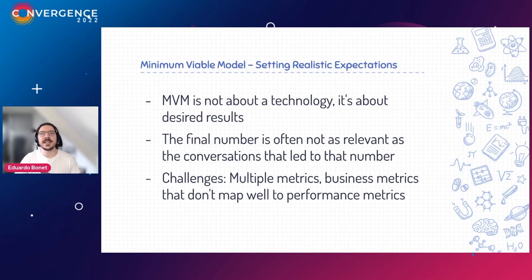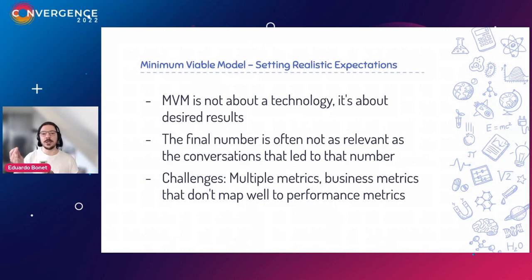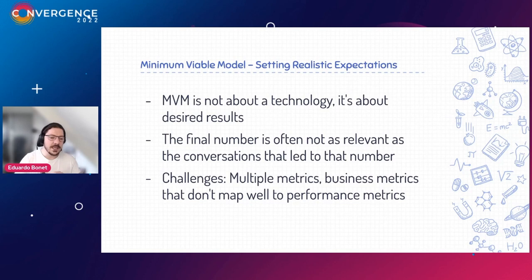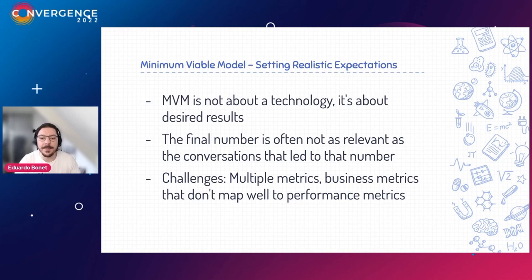At no point in this process do we speak about technology — which model, which stack, TensorFlow, random forests, or neural networks. It's about what's the minimum needed to consider this a success, and all technical decisions flow from that. The final number you reach — the MVM — is less important than the process that led to it. The number will likely need to be adjusted over time with new data and new assumptions. But the point is that this becomes a framework to talk about everybody's expectations right from the start, not six or seven months later. Challenges exist, for example when balancing metrics across a multi-sided market.